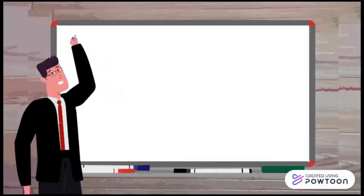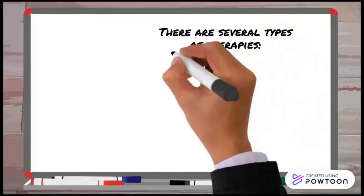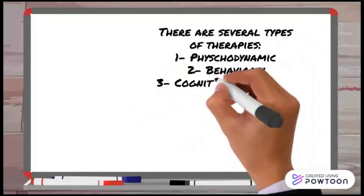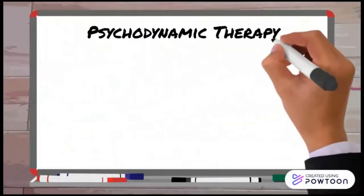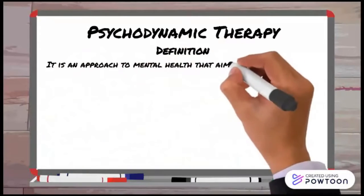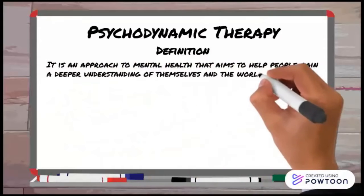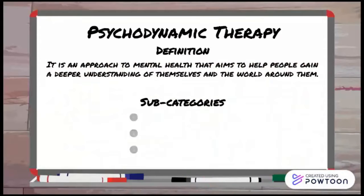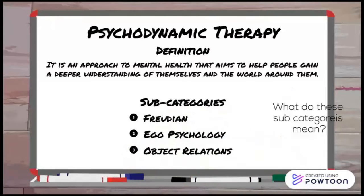There are several types of therapies: psychodynamic, behavioral, cognitive behavioral, humanistic, holistic, and art. Let's start off with psychodynamic therapy. It is an approach to mental health that aims to help people gain a deeper understanding of themselves and the world around them. It has multiple subcategories, which are Freudian, ego psychology, and object relations.